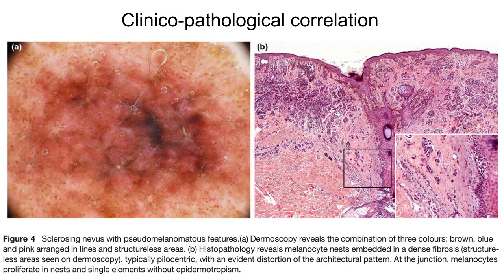Here is another example of a sclerosing nevus, in this case with predominance of structureless areas, blue and white, and the histopathological correspondence again showing junctional alteration atypia, the sclerosing band, and the dermal nest in depth.